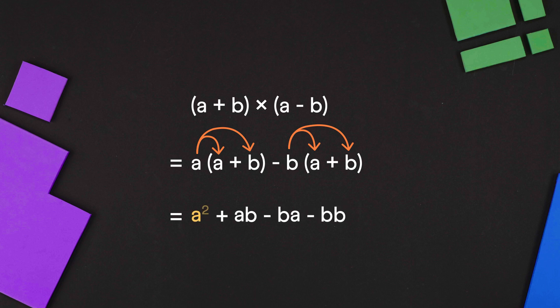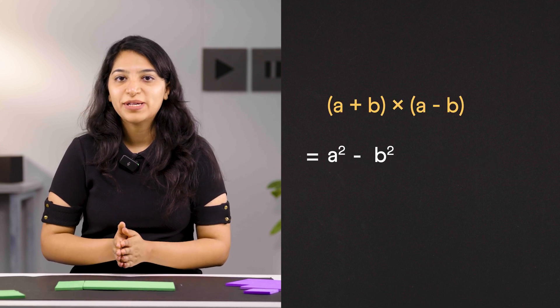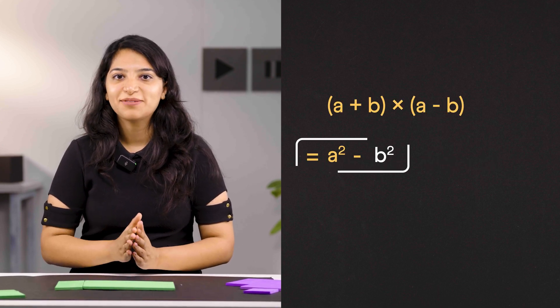So we get a squared plus ab minus ba minus b squared. ab and ba are the same and subtracting them gives 0. There you have it. a plus b times a minus b equals a squared minus b squared.